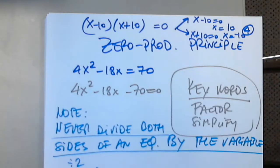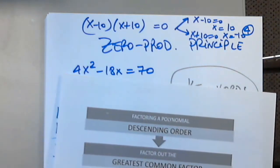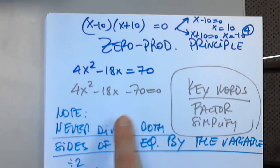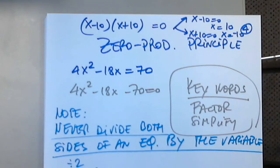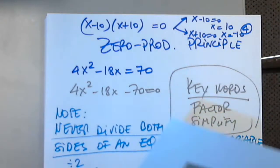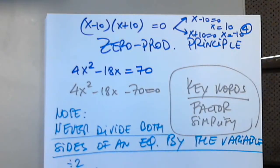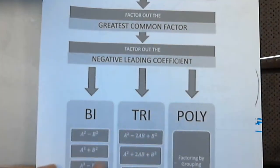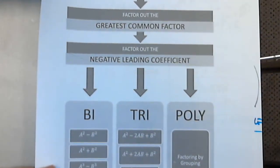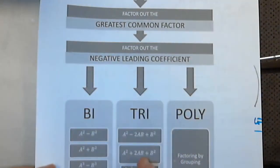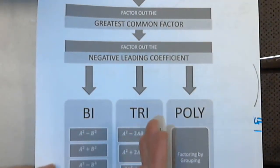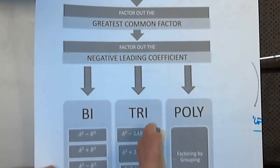Is it in descending order? Yes. Greatest common factor? None — I got rid of it by dividing by 2. Negative leading coefficient? No, the leading coefficient is 2. I check if the trinomial is a perfect square trinomial — 2x squared is not a perfect square, and 35 is not a perfect square. So those formulas don't work.